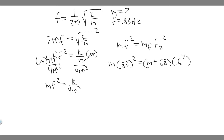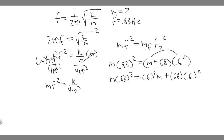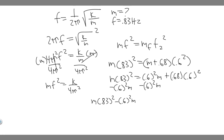Now we solve for m. Expand the right side: m times 0.83 squared equals 0.6 squared times m plus 0.68 times 0.6 squared. Subtract 0.6 squared times m from both sides: m times 0.83 squared minus 0.6 squared times m equals 0.68 times 0.6 squared. Factor out m on the left: m times (0.83 squared minus 0.6 squared) equals 0.68 times 0.6 squared.